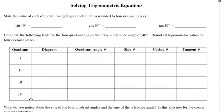Okay, part two. So solving trig equations. State the value of each of the following trig ratios, rounded to four decimal places. So you need your calculators out. You have to be in degree mode.